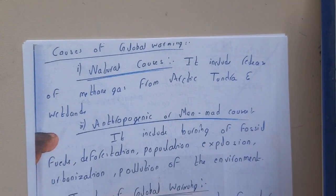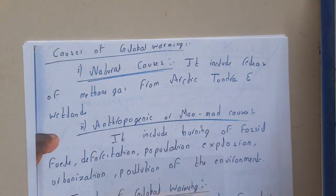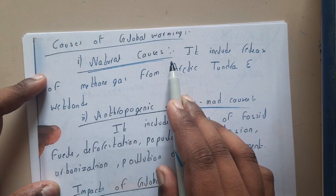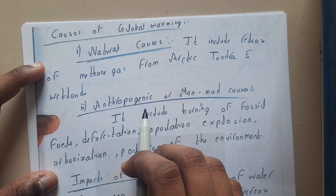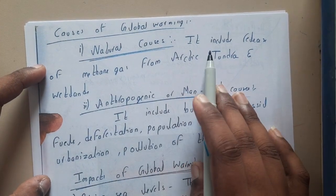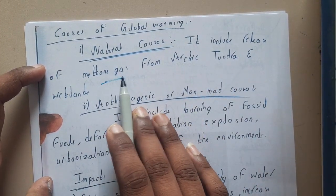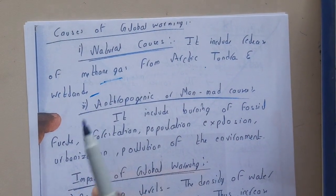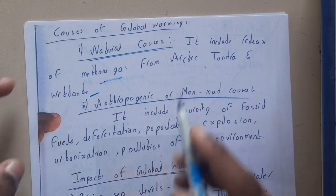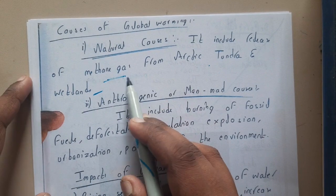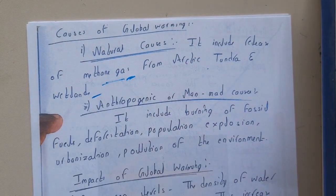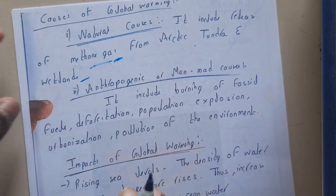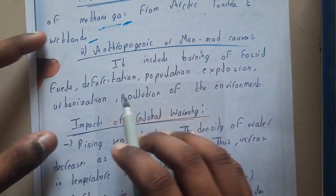You might be wondering what causes global warming and how and why it happens. There are two major causes. The first is natural causes and the second is anthropological, or man-made. Natural causes include the release of methane gas from the Arctic tundra and wetlands — basically when ice melts in cold areas, the ice blocks release gases which can cause global warming.